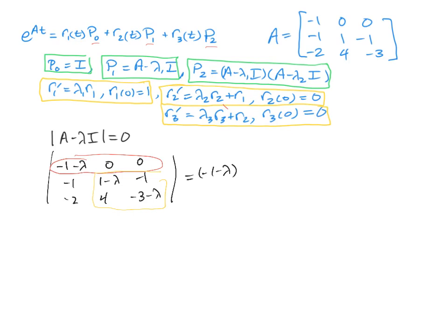which is going to be 1 minus lambda, 4, negative 1, and negative 3 minus lambda. And the other two entries are both going to be 0, because we have 0 as our coefficient in front of our sub-determinants.